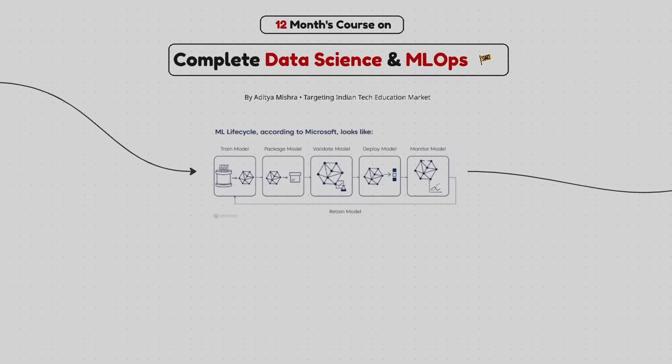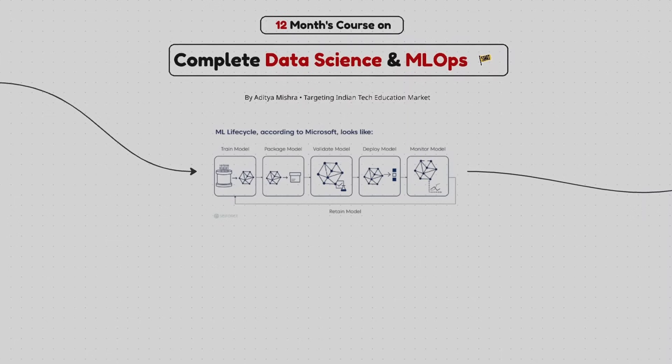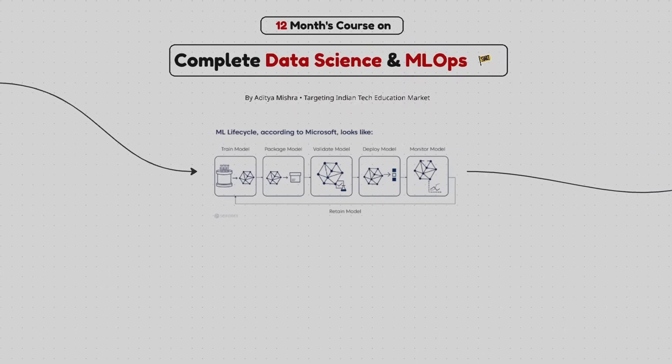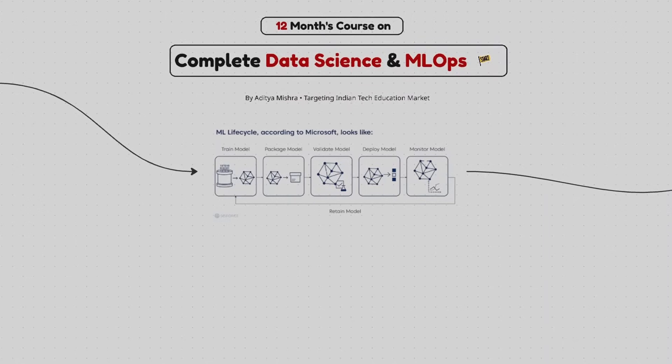And the other best part is data scientists earn around 8 to 15 LPA, while machine learning engineers earn 10 to 18 LPA and machine learning operations engineers can earn up to 20 LPA in the current market. So grab your notebook and get comfortable with me. Let's get started. Let's have a quick overview of the entire syllabus that we are going to cover.